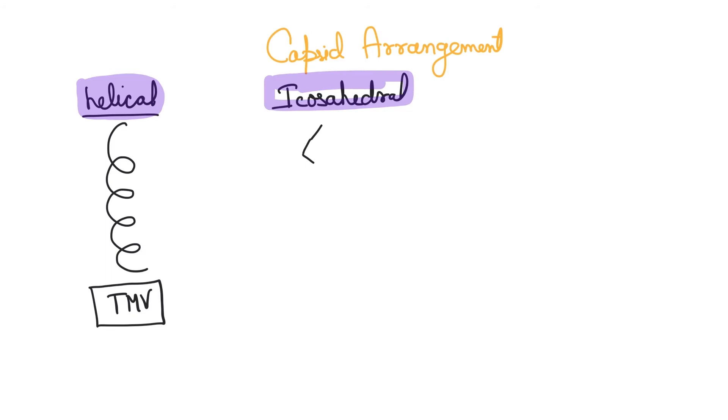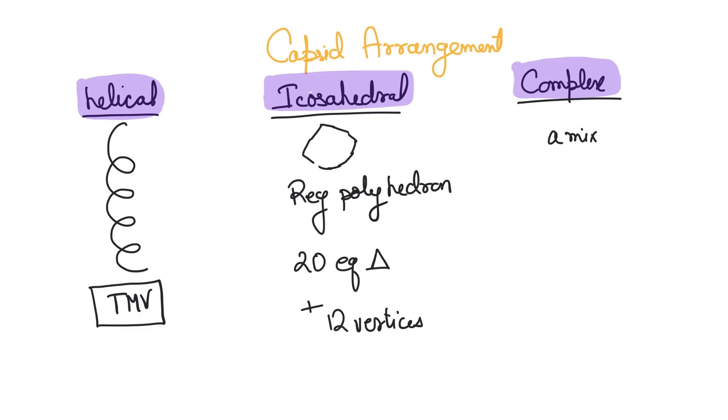Let's talk a little bit more about capsid arrangement, which can be of variety of types. This one is helical. It's arranged as a helix like the TMV virus. It can also be icosahedral. Icosahedral is a regular polyhedral. It will have around 20 equilateral triangles coupled with 12 vertices. The third can be a complex arrangement, which can be a mix of the two or simply an arrangement that does not fit the profile. One of the popular examples here is bacteriophage. It's like a mix of helical and icosahedral. We'll talk about bacteriophages in a different video altogether.